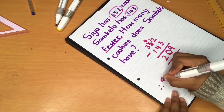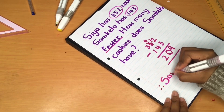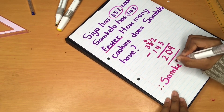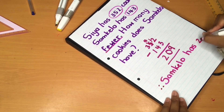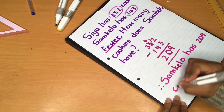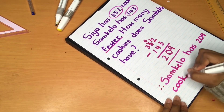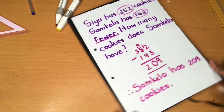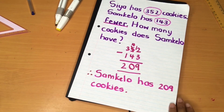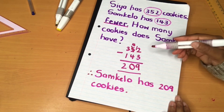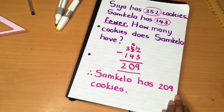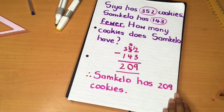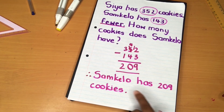Therefore Samkelo has 209 cookies. We've shown our working out: 352 minus 143 equals 209, and we've answered our word problem — how many cookies does Samkelo have? Samkelo has 209 cookies.